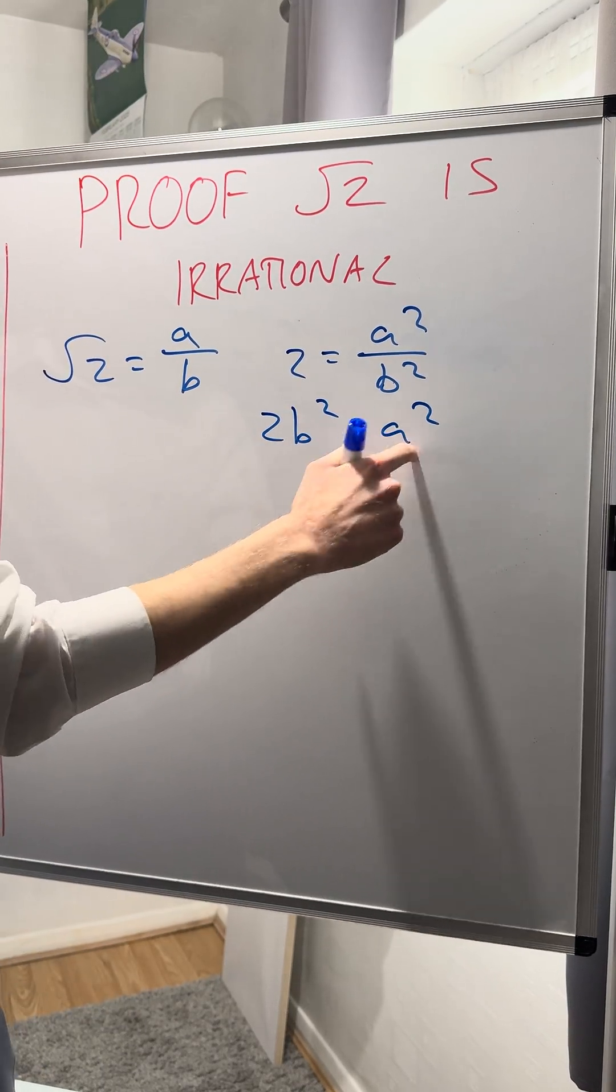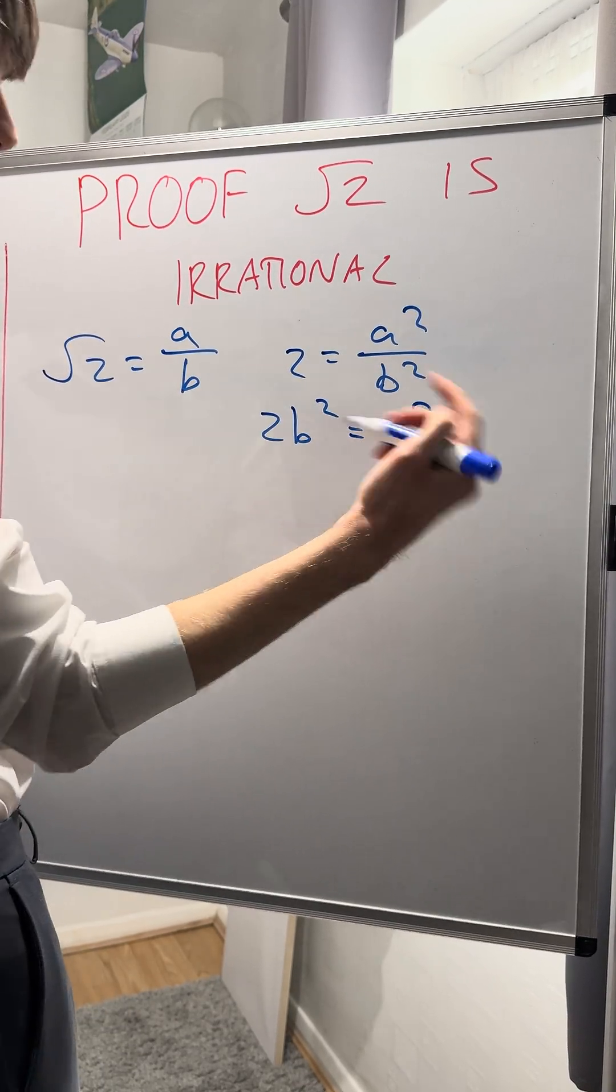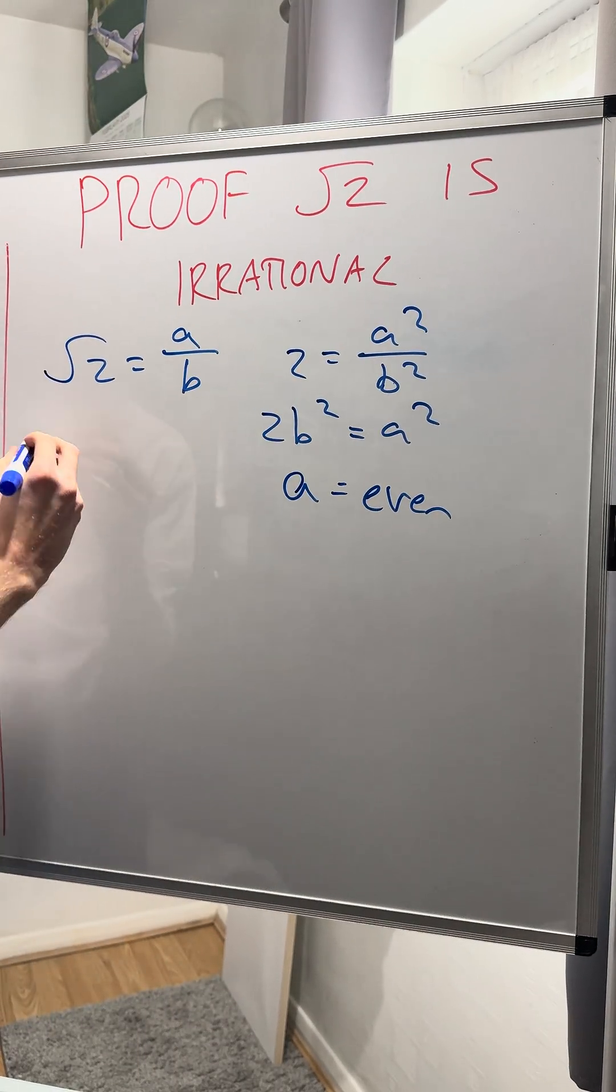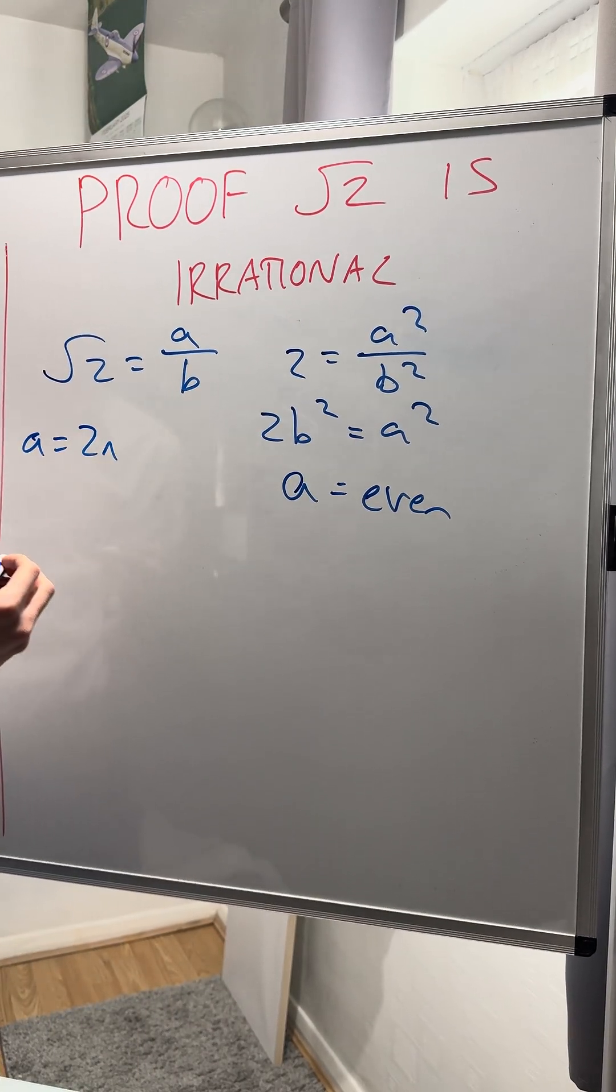Now, 2 times any number must equal an even number. So if a squared is even, a is even. Why is this important? Well, if a is even, that means a equals 2n.